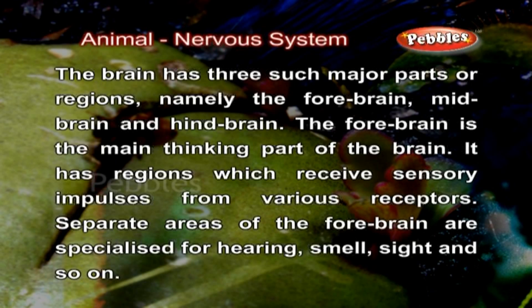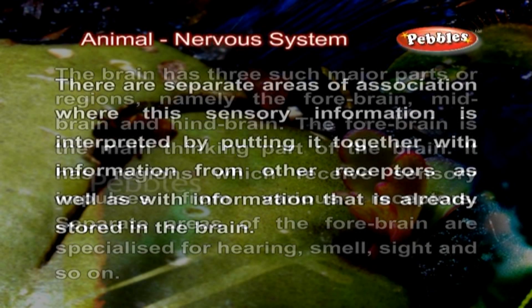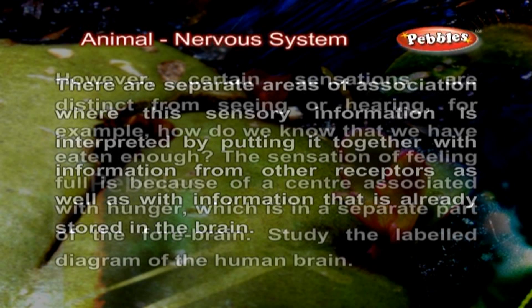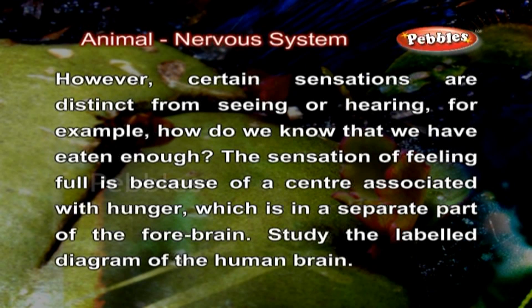The forebrain is the main thinking part of the brain. It has regions which receive sensory impulses from various receptors. Separate areas of the forebrain are specialized for hearing, smell, sight and so on. There are separate areas of association where sensory information is interpreted by putting it together with information from other receptors as well as with information already stored in the brain. Certain sensations are distinct — for example, how do we know we have eaten enough? The sensation of feeling full is because of a center associated with hunger, which is in a separate part of the forebrain.